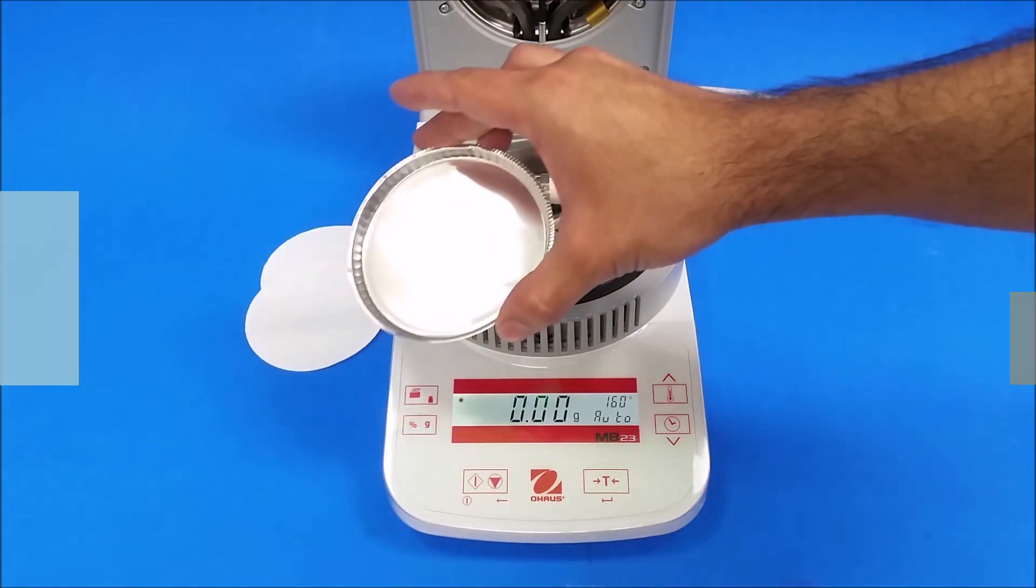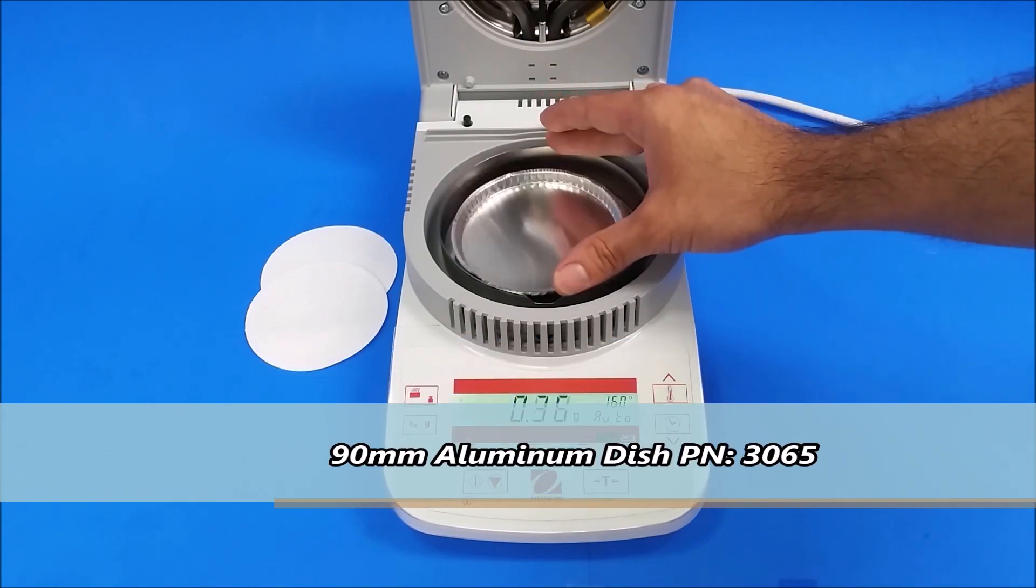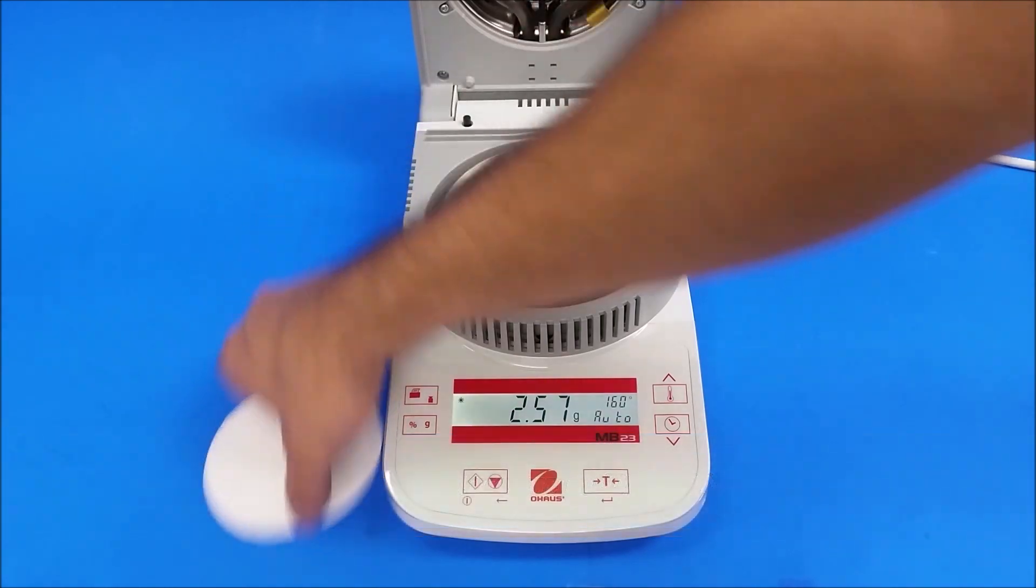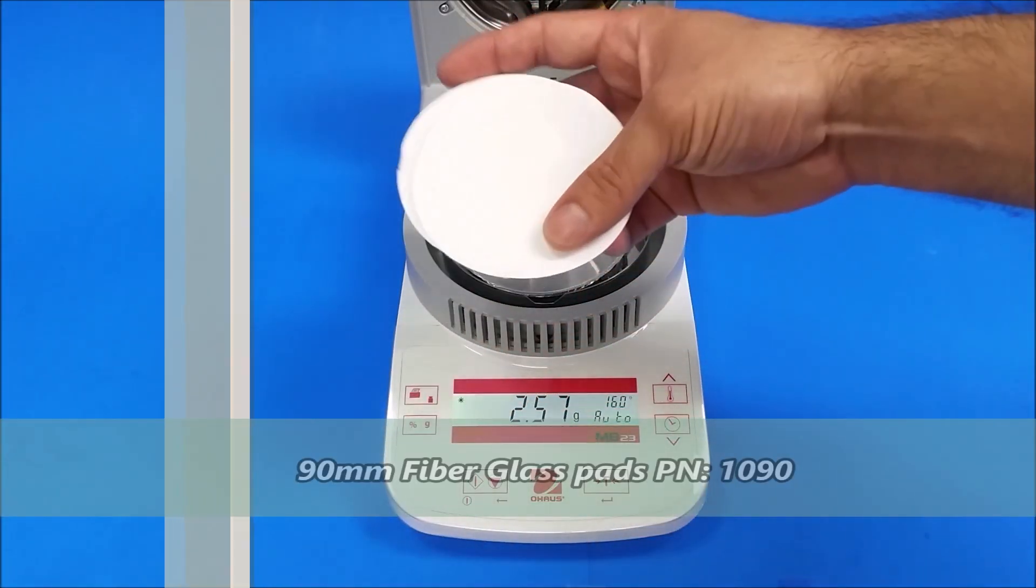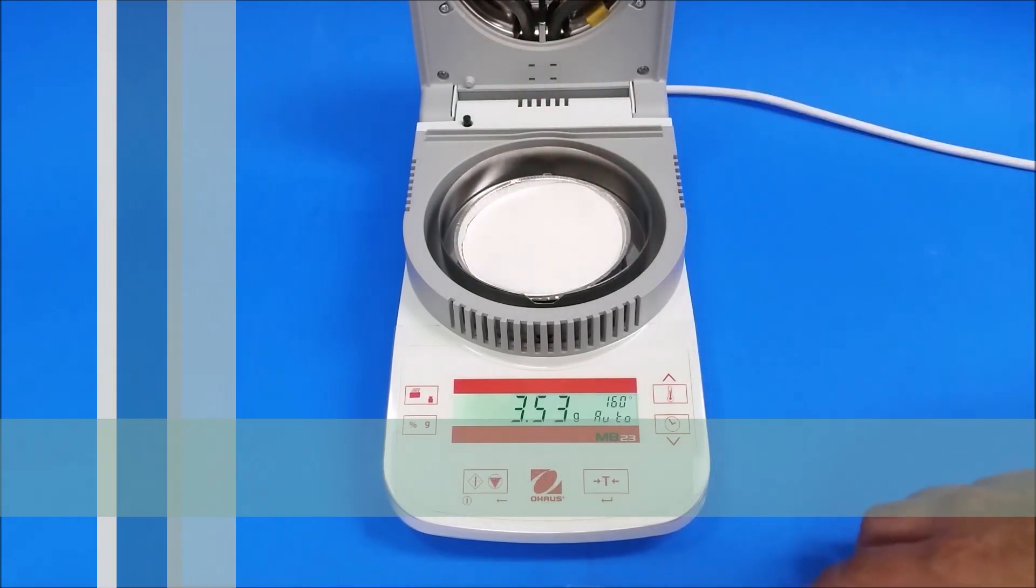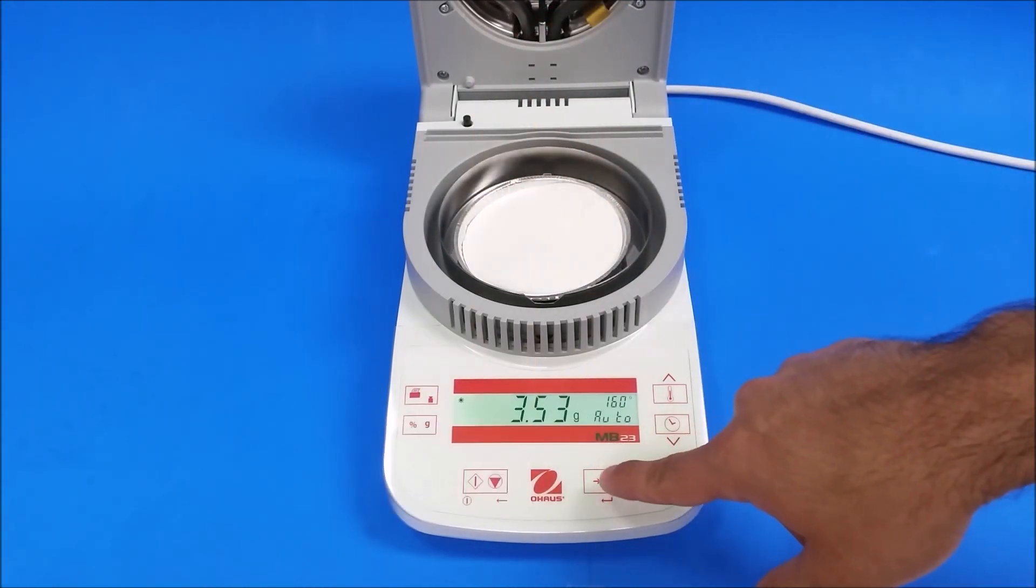So first, I want to put the aluminum dish in first. Then my two pads. You're going to want to hit tare.